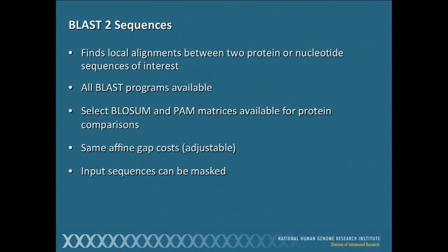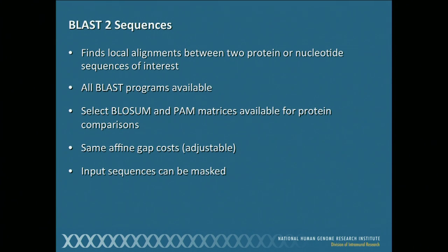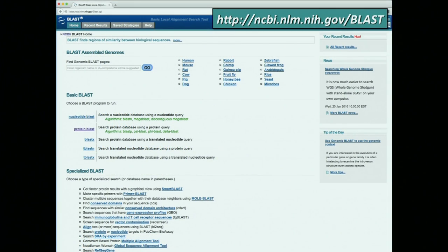There were some other things on the BLAST page that I want to point out to you. Let's say instead of just having a sequence of interest and trying to deduce new relationships by comparing it to a database of sequences, you have two sequences, A and B, that you just want to align with each other. We're going to use something called BLAST2 sequences to do that. We're going to come back to our BLAST home page, and this particular program is found in the lower part here — BL2SEQ, align two or more sequences using BLAST.